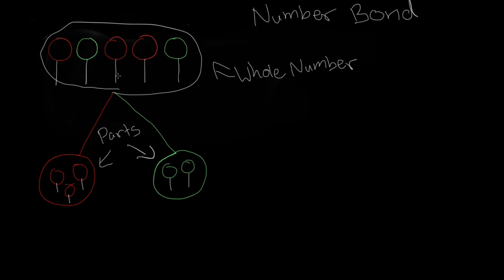Now, we can also write a number bond with regular numbers too. So, our whole number is five: one, two, three, four, five, because we have five lollipops all together.